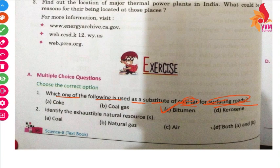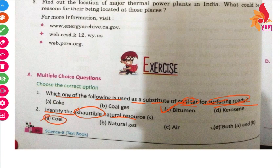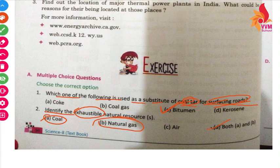Our next question is: identify the exhaustible natural resource. Exhaustible means it will be finished over time. Coal is exhaustible, and natural gas is also an exhaustible resource. So the answer is both A and B.